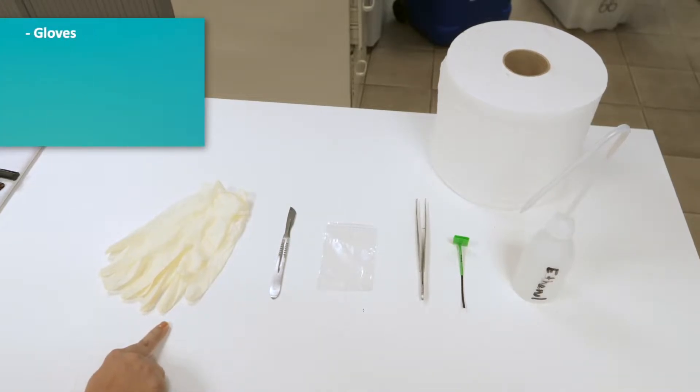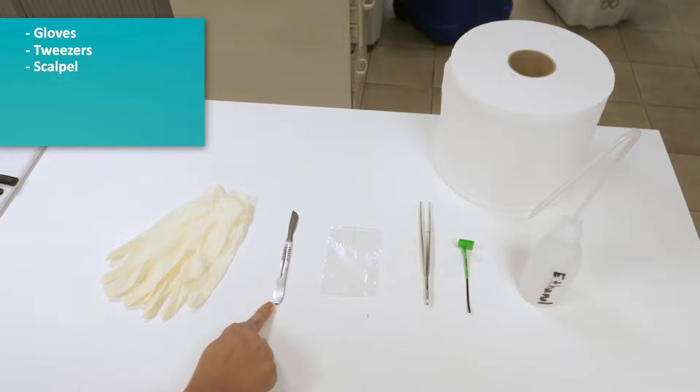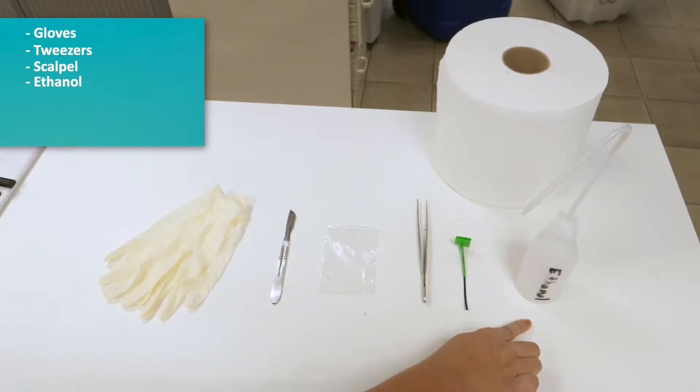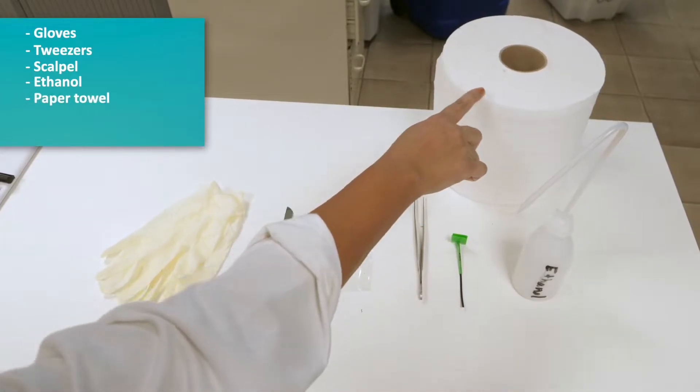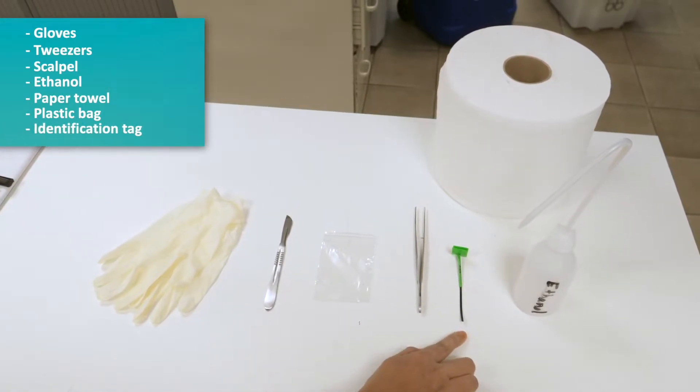Gloves, tweezers, a scalpel, 95% ethanol - it's best to use this to ensure that the DNA is preserved - paper towel, a plastic bag, and an identification tag.